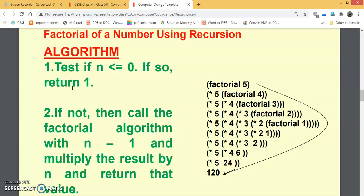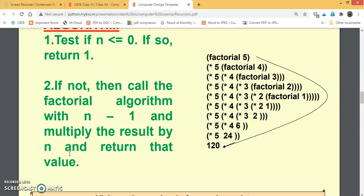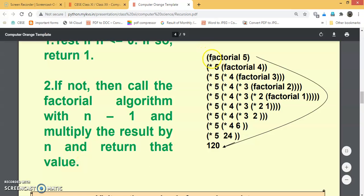If the value is zero or minus one, its factorial is considered one. But if not, if it is not one, zero, then call the factorial algorithm with n minus 1 and multiply the result by n and return that value. For factorial of 5, we call factorial 4, then 3, then 2, then 1.